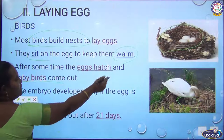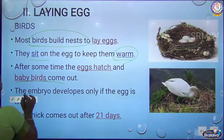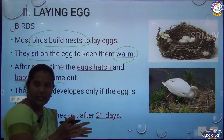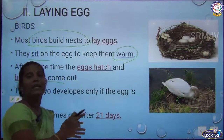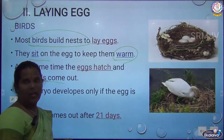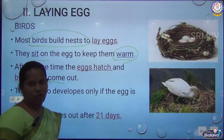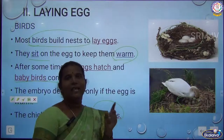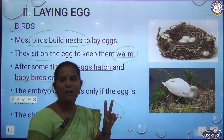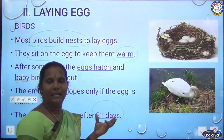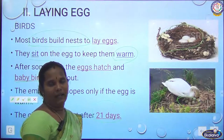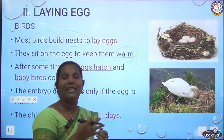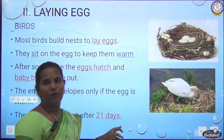Some eggs hatch and baby birds come out. The embryo develops only when the egg gets warmth. If the egg gets warm conditions, the small baby comes out; otherwise the egg will be destroyed. A chick comes after 21 days of incubation — the embryo needs this time to grow and develop the complete body of the small bird.